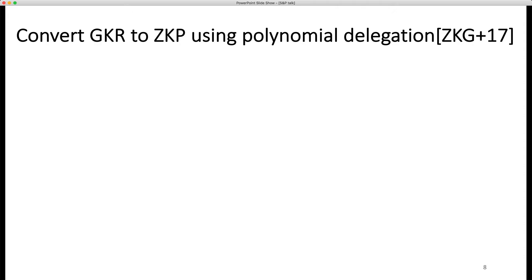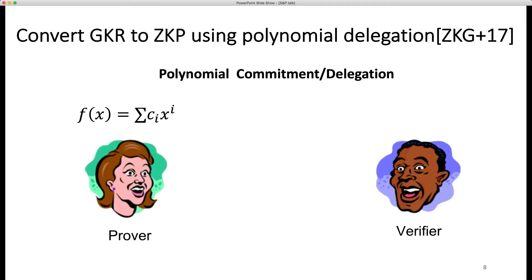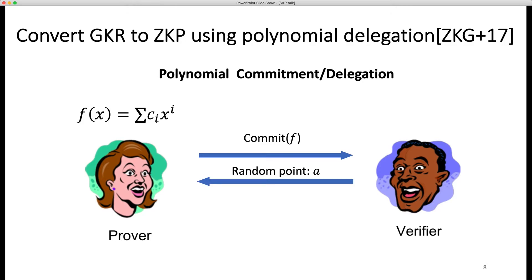GKR protocol is not zero-knowledge, as the verifier knows the input W itself. But we can use polynomial commitment to make the GKR protocol zero-knowledge. Polynomial commitment or delegation means the prover could convince the verifier that the evaluation of a polynomial F on random point A is F(A). In the first round, the prover commits the polynomial F, then receives the random point A from the verifier, and finally the prover computes F(A) and sends it back with proof PI. The verifier can validate the statement but learns nothing about F except the value of F(A). We use a univariate polynomial F as an example, but we can extend it to multivariate polynomials easily.